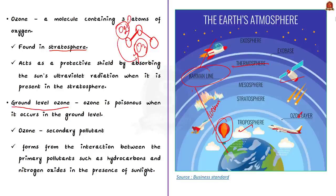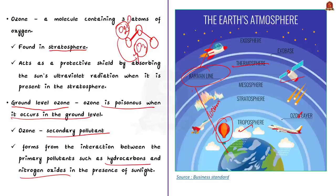Let us see how ground level ozone is formed, because that is something very harmful. Unlike the normal diatomic molecules of oxygen, ozone is poisonous when it occurs at ground level. Ozone is also a secondary pollutant that forms from the interaction between primary pollutants such as hydrocarbons and nitrogen oxides in the presence of sunlight. Its formation is mainly from automobile emissions.